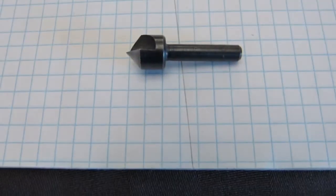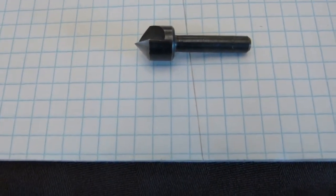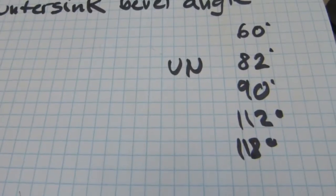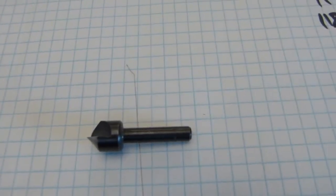So this is a 95 degree countersink bit. Now, do they manufacture a 95 degree screw? No. So what happens when this doesn't match anything?